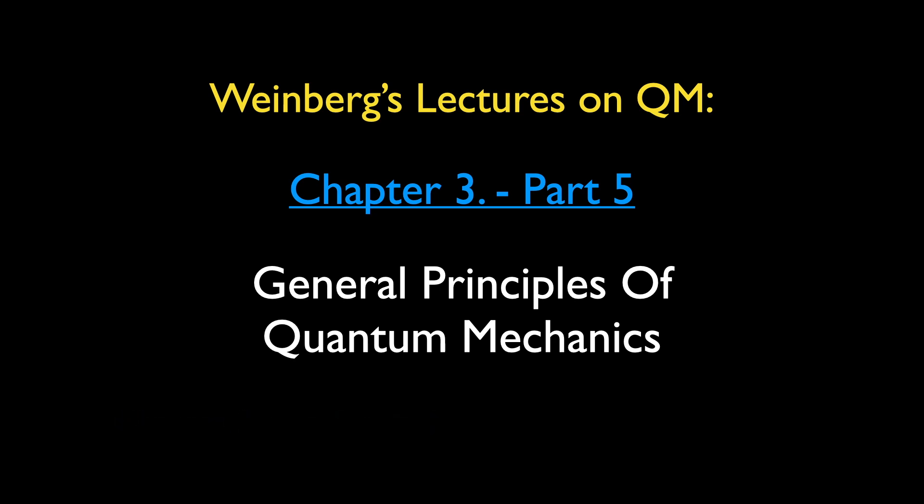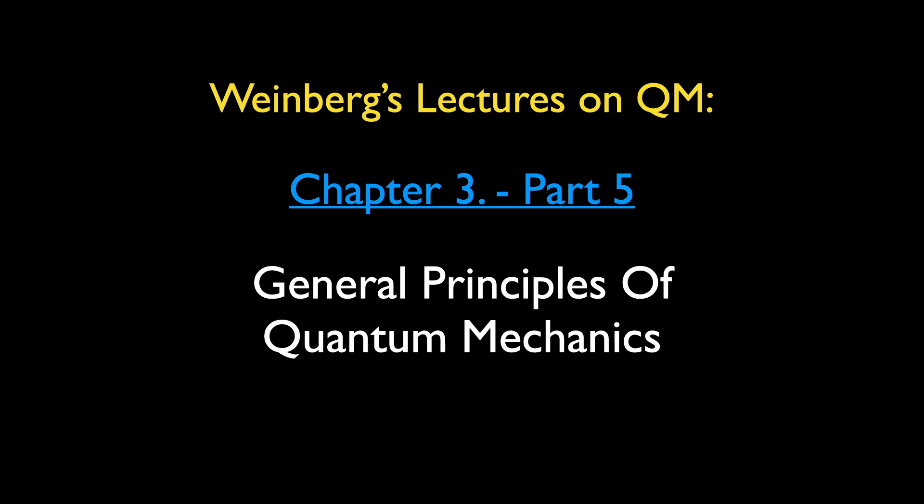In the last lecture, we ended with a discussion of the classical limit of quantum mechanics and how it could be used to determine the Hamiltonian of a system. In this lecture, we shall continue our discussion of the Hamiltonian, in particular its eigenstates and eigenvalues under the conditions of symmetries. Further examples of symmetry transformations in quantum mechanics will also be introduced, and we shall explain what it means for a quantum system to possess symmetries.